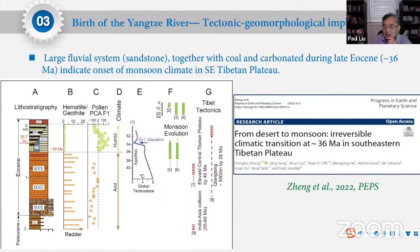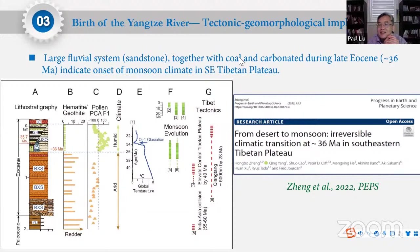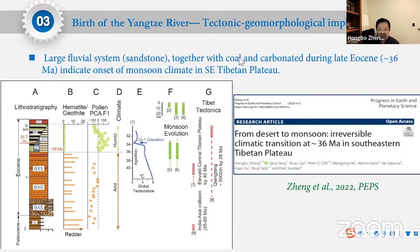A question in the chat asks: did the evolution of the Indian Summer Monsoon influence the formation of the First Bend of the Yangtze River? Hongbo responds: This is a very good question — it's why I mentioned the Asian monsoon at the end of my talk. This is a big issue. Our evidence suggests the onset of monsoon at around 36 million years old, which is older than the dominant view.